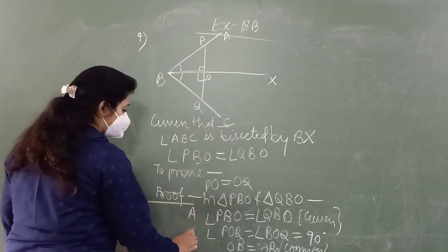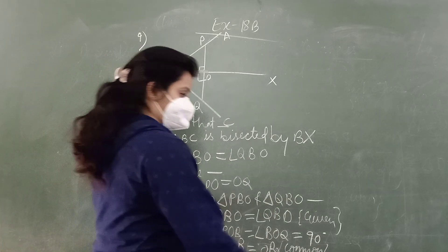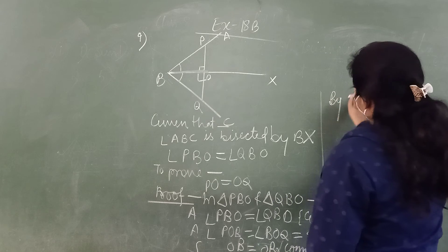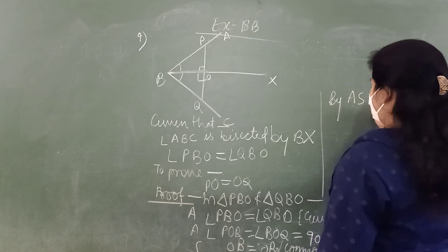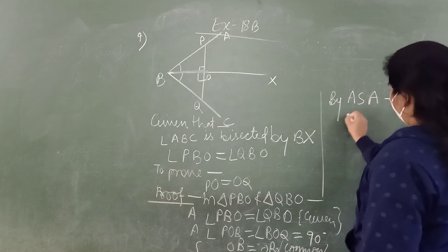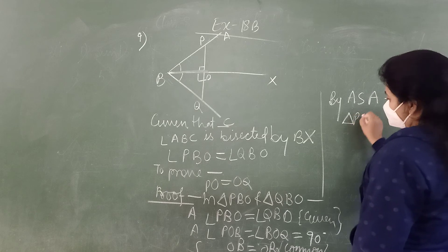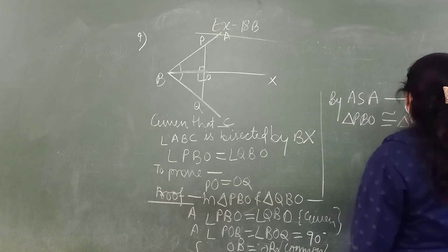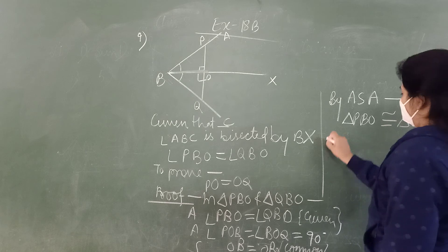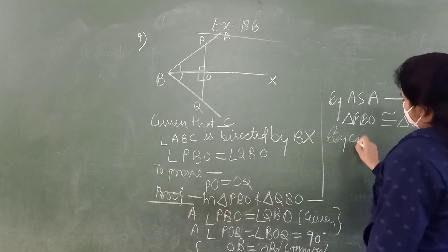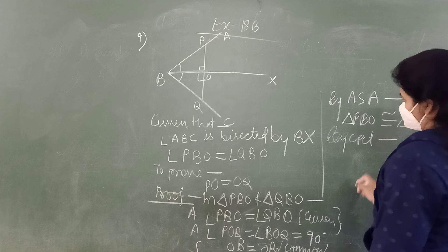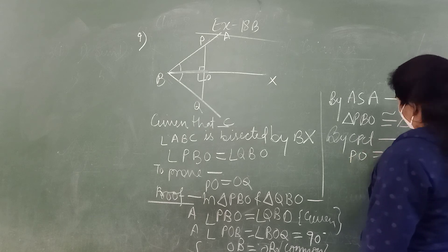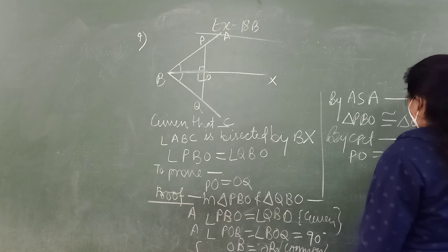Now we have two angles and one side equal. So by ASA, triangle PBO is congruent to triangle QBO. So by CPCT, PO is equal to OQ. Hence it is proved.